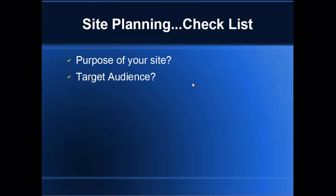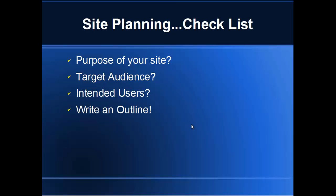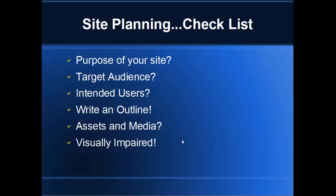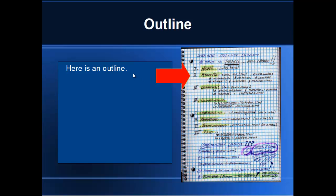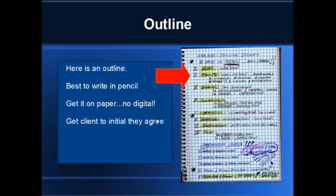Site planning - let's go over our checklist. The purpose of our site, our target audience, and who are the intended users. We must write an outline for that site. What are the assets and media? Are there visually impaired people to consider? And what about file management? I strongly recommend that you write out your outline. Write it in pencil so you can change it - get it on paper. Have the client initial that they agree to this plan. Then this becomes your roadmap for your actual website. It's simple, it's quick, and it works.